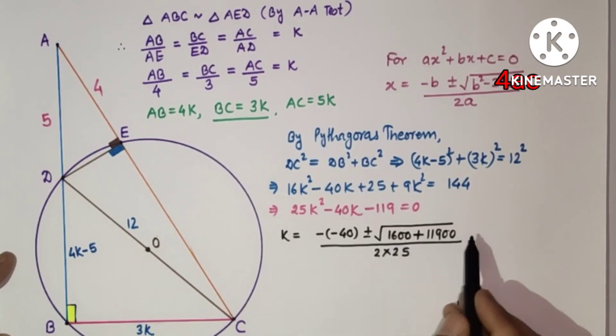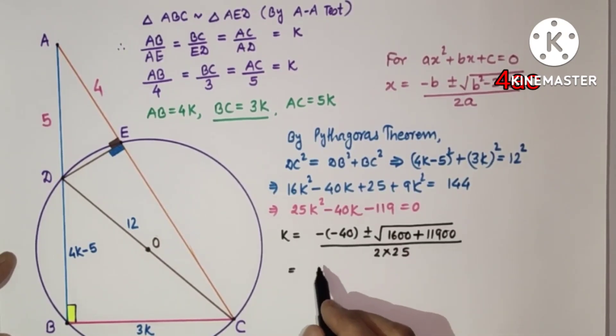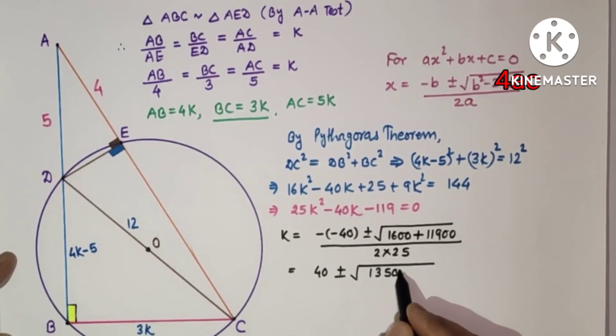If we add this, we will get 40 plus minus under root of 13500 by 50.